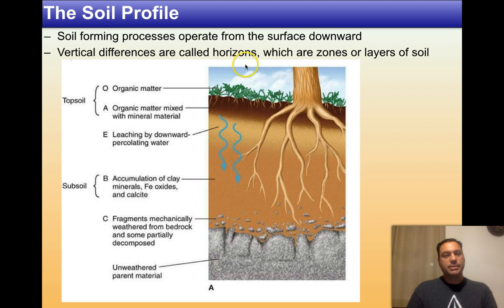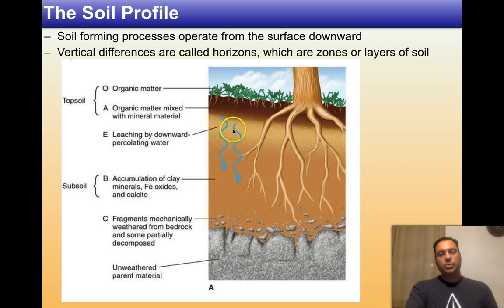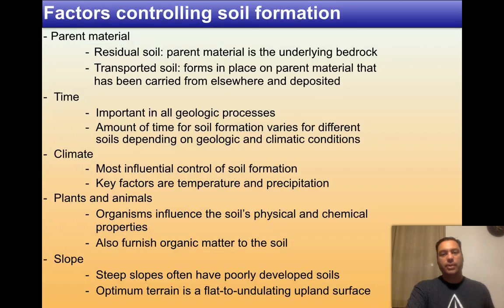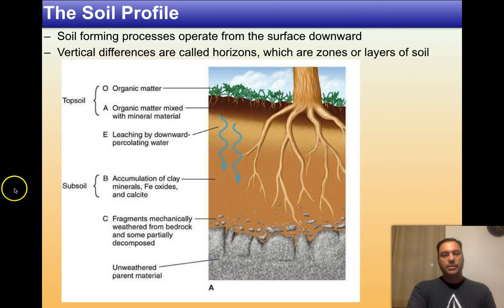The A horizon is the organic matter mixed with mineral material. Sitting below the O and A horizon is the E horizon — leaching by downward percolating water. Water working its way through the plants picks up a little acid, which strips out a lot of the nutrients, percolating clay minerals, iron oxides, and calcite downward. This creates an area that is lacking many minerals and discolored, usually to a lighter color. Going back to the original photograph, you can see the A horizon and the O horizon with that grassy material up top.